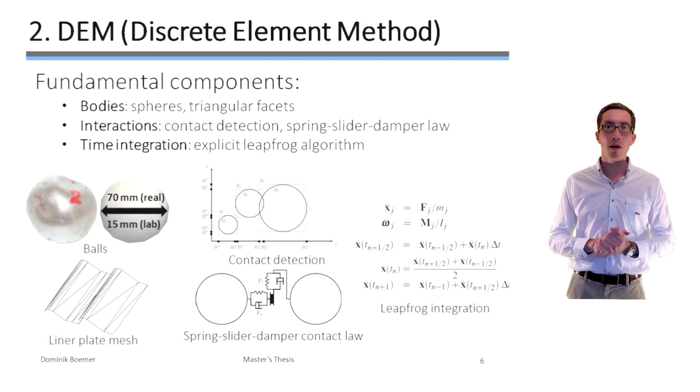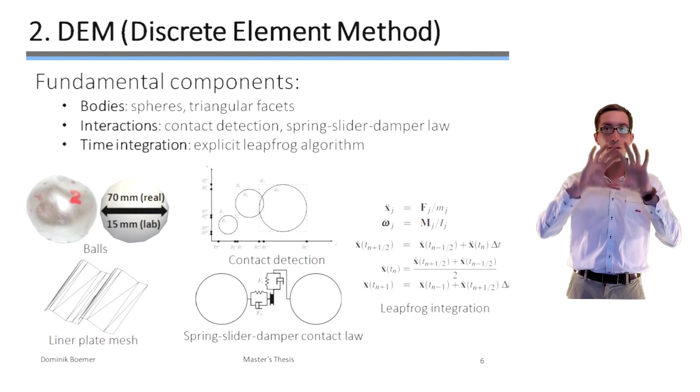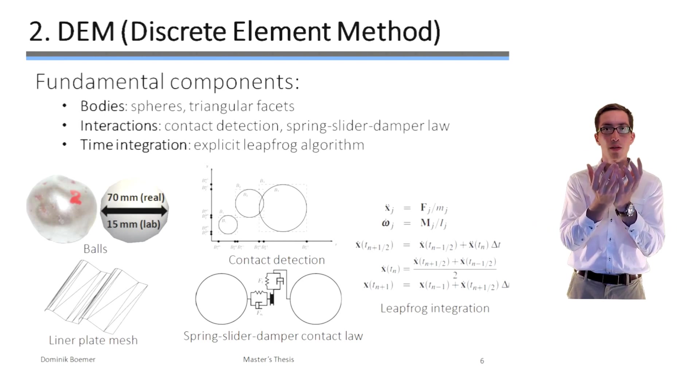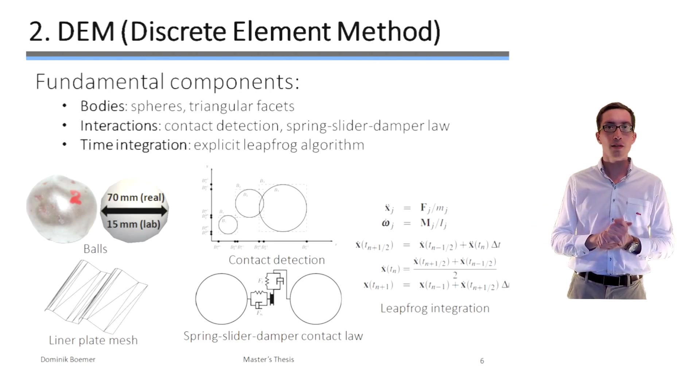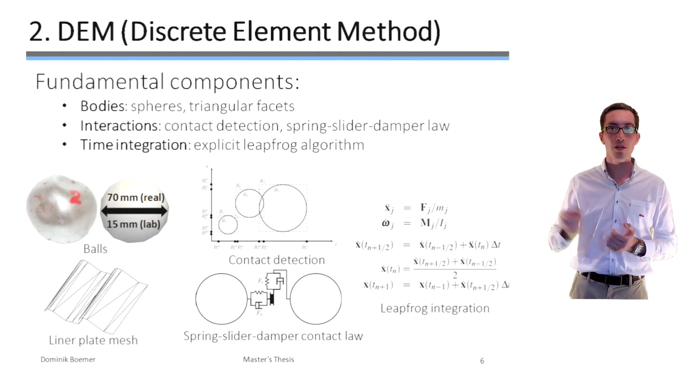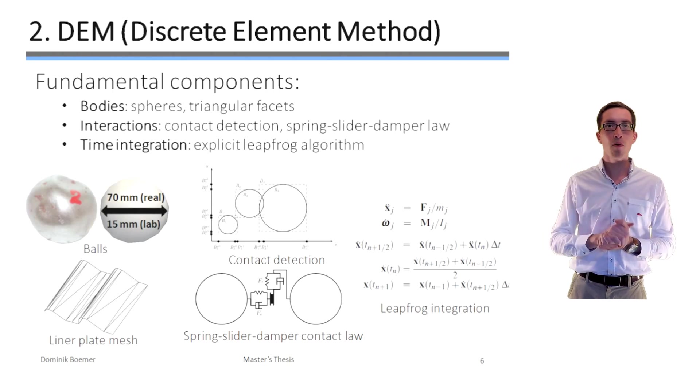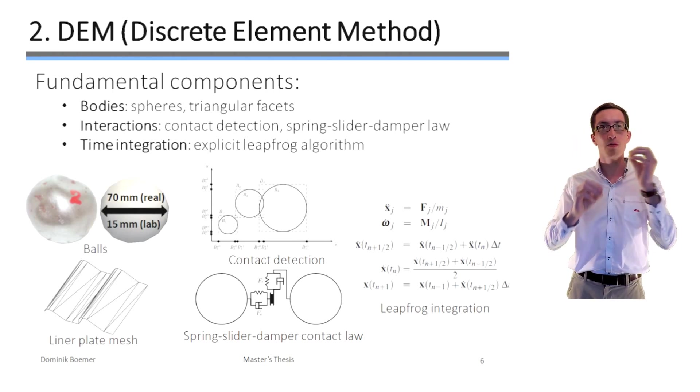So in the case of a ball mill, the bodies are essentially spherical elements representing the balls and triangular facets or surface meshes representing the liner. So while these facets are rotating around the rotation axis of the mill, the balls are floating in space according to Newton's second law.